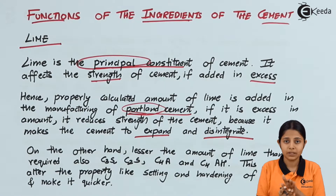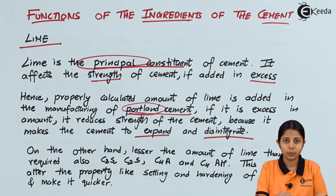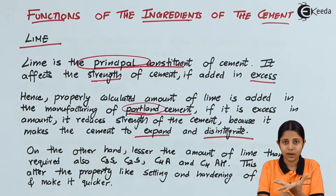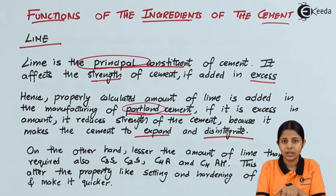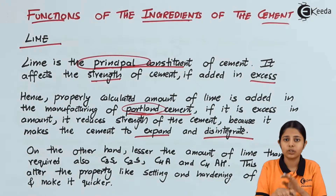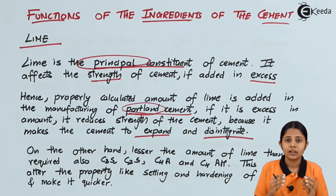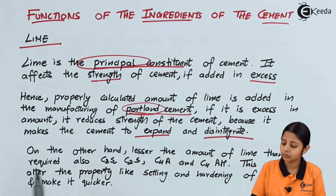If there is too much Lime inside the cement and it is spread on a brick, after some time that cement will start expanding. If it expands, the brick will not stay in position — it will either collapse or stick improperly to the brick below. That is not desirable, and that is why we do not want cement to expand excessively or disintegrate. We must ensure that Lime is kept in proper proportions. On the other hand, lesser amounts of Lime than required is also problematic.